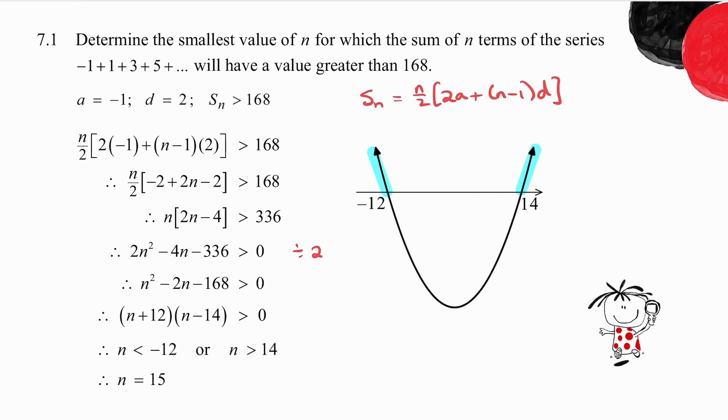Now, n is the number of terms. n has to be a natural number. n can only be 1, 2, 3, 4, etc. And they ask you for the smallest value of n. I can't have values less than minus 12. So n has got to be greater than 14. And what is the smallest natural number greater than 14? n must be equal to 15.